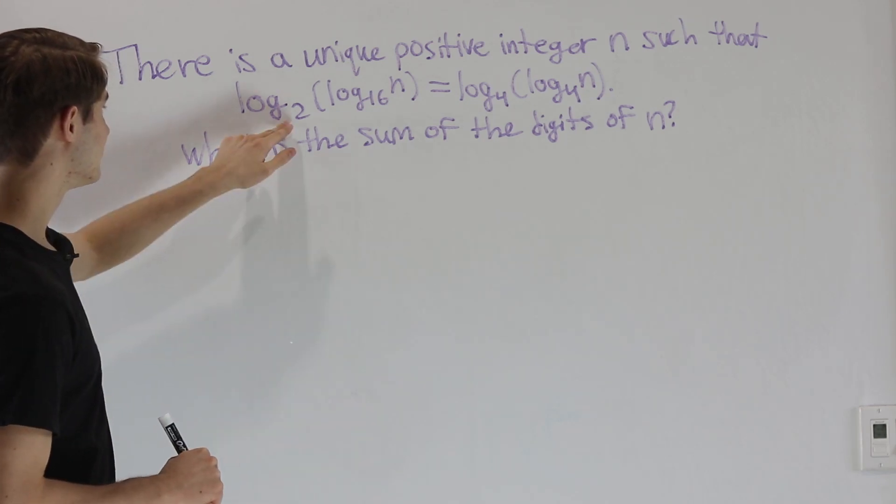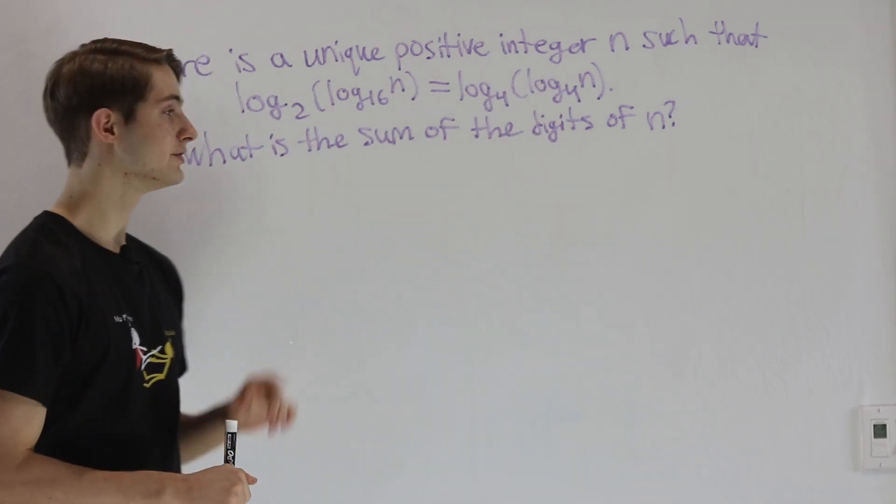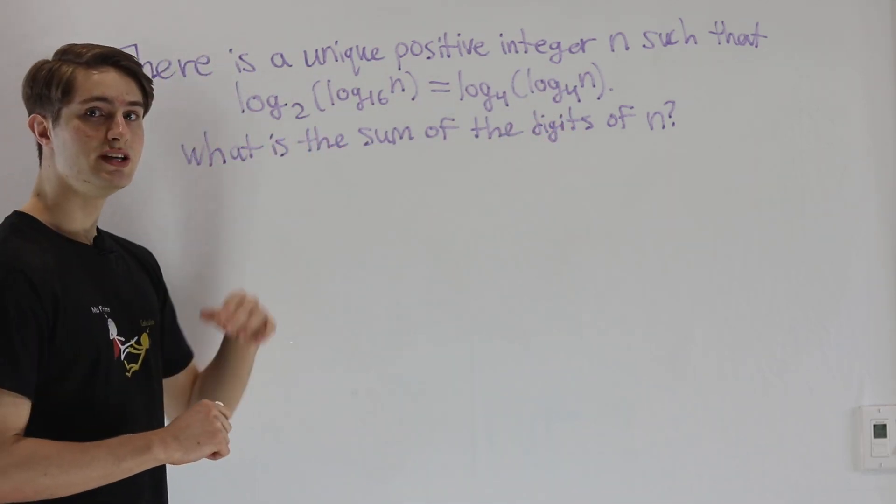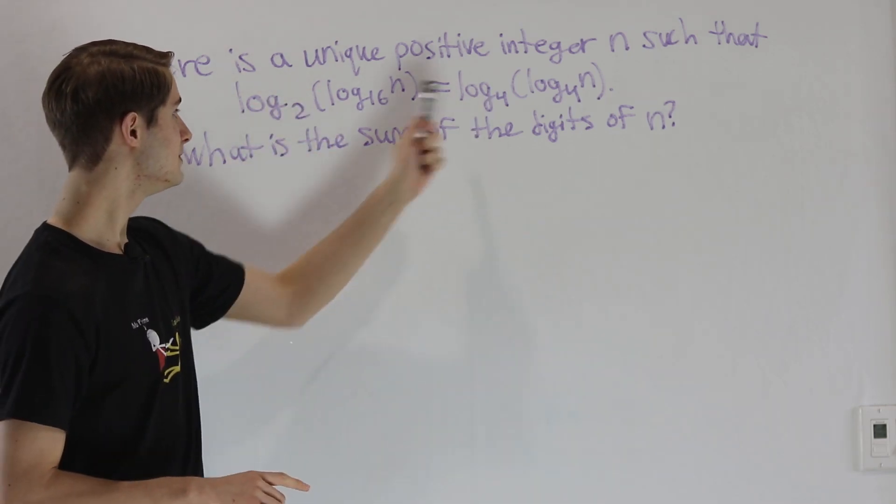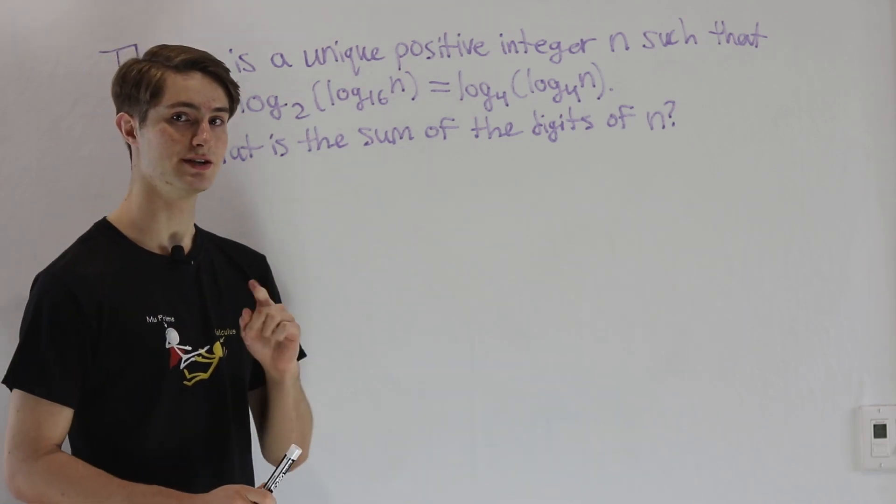I noticed starting out that we have log base 2 and log base 4 as the outside function on both sides. If we take 4 to the power of both sides of this equation, that's going to cancel out our logs immediately and we don't have to worry about any conversion.